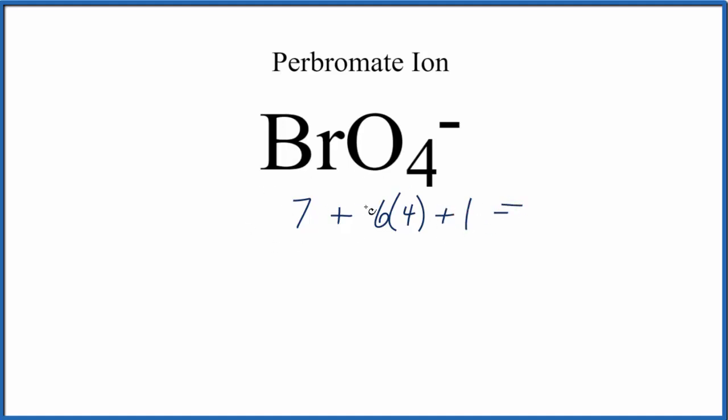You add these numbers up, you get 8 plus 24, 32 total valence electrons for BrO4-.